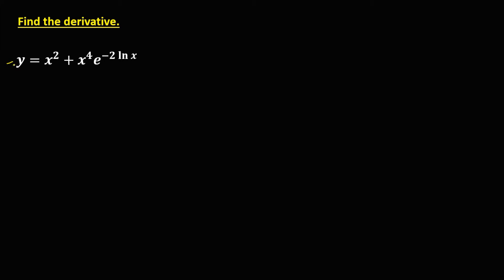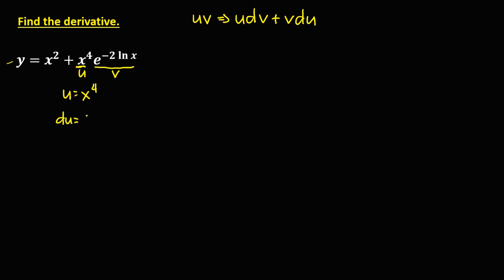To find the derivative of this given, since we have multiplication, we're going to use the product rule: u times v. The derivative is u times the derivative of v plus v times the derivative of u. So u is x to the power 4, and the derivative of u is 4x to the power 3.